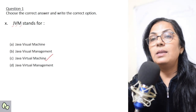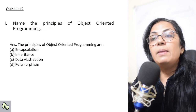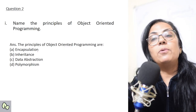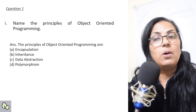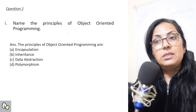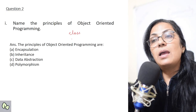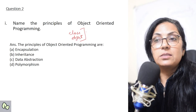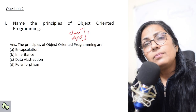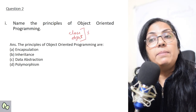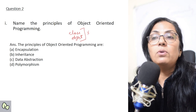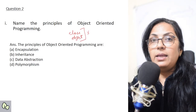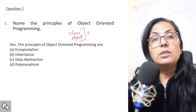Now we move to question number 2: 'Name the principles of object-oriented programming.' The four principles are: encapsulation, inheritance, data abstraction, and polymorphism. Children, I would suggest you don't write 'class and object' when principles of OOP are asked. If the question says 'name the elements,' then you can include class and objects — but not as principles. These four are the principles.